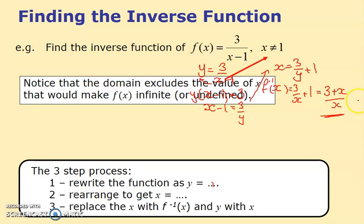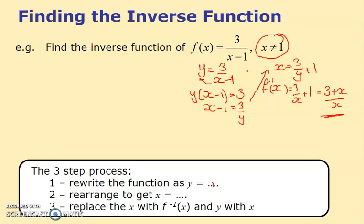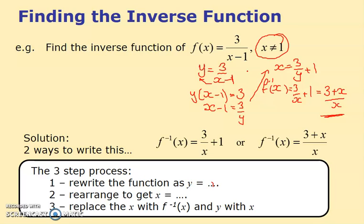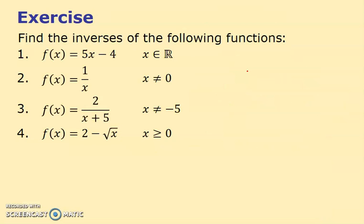The restriction x ≠ 1 is noted because if x = 1 then x − 1 = 0, and 3 ÷ 0 is undefined. That's the only reason for the restriction. Notice I didn't use it in my working — I'd recommend you do the same and simply note it.